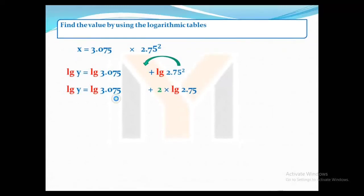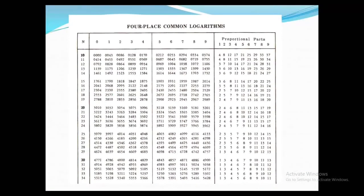So we'll move to the log table. Here you can see 3075. Where is that? Row number 30, that's here, and column number 7. Row number 30, column number 7. In that, you can see 4871 is there. 30, 7, and 5. And 5, just 4871, keep that in your mind. And mean difference 5, under mean difference 5, 7 is there.